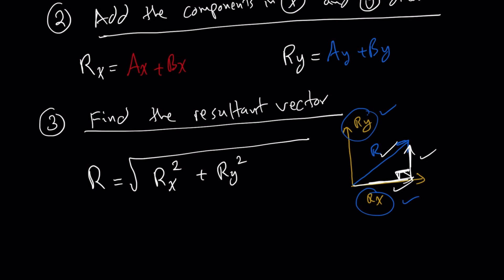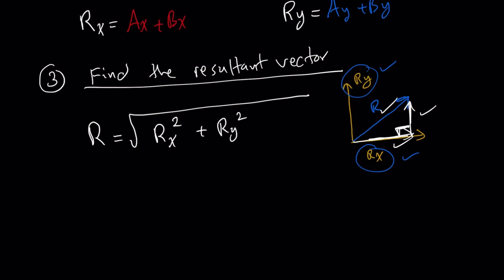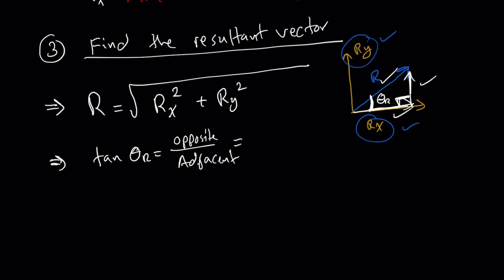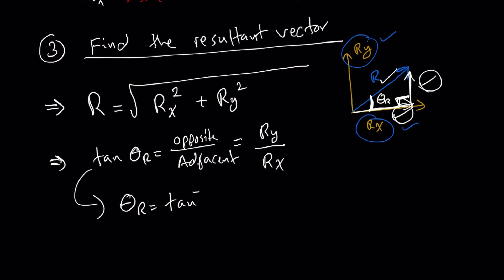Once we've found the resultant magnitude, we need to find the angle at which this resultant vector is acting — let's call it theta r. Using trigonometry, tan theta r equals opposite over adjacent, which equals Ry over Rx. To unlock the angle: theta r equals tan inverse of Ry over Rx. Now we are able to find the resultant vector.